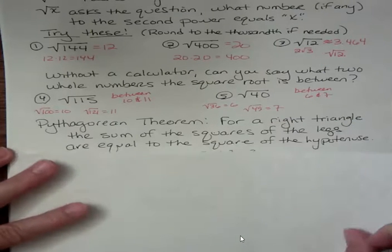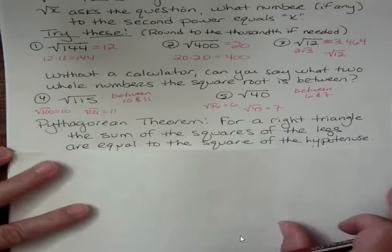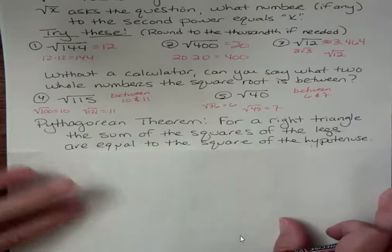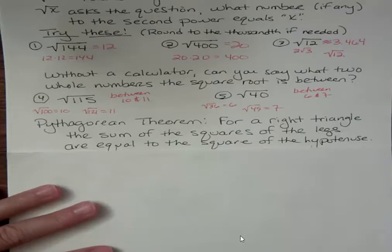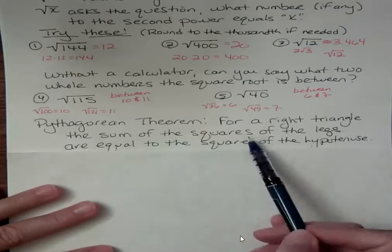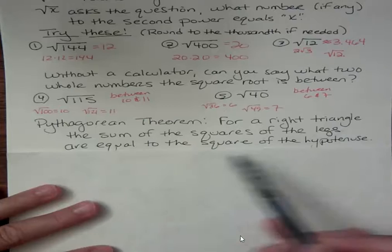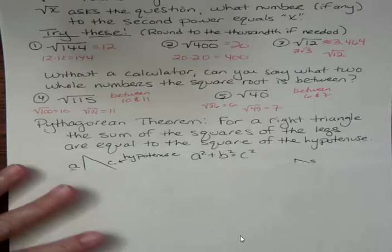Okay. So then the next part of this video is also something that should be a review for you. You shouldn't be hearing Pythagorean theorem for the first time in your life, even though you may not have remembered exactly what it is. It should sound familiar. Pythagoras is a pretty famous person. You've probably heard the name. For a right triangle, the sum of the squares of the legs are equal to the square of the hypotenuse. So we'll see what that means, but that's what Pythagorean theorem says.